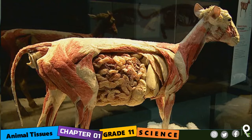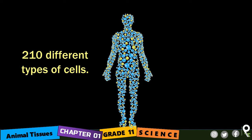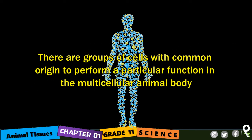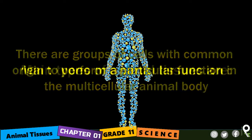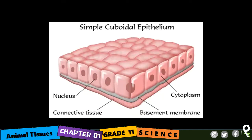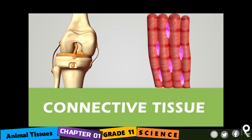The animal body is also made up of different types of cells. For example, the human body is made up of about 210 different types of cells. There are groups of cells with a common origin to perform a particular function in the multicellular animal body. The main types of animal tissues are: epithelial tissue, connective tissue, muscle tissue, and nervous tissue.